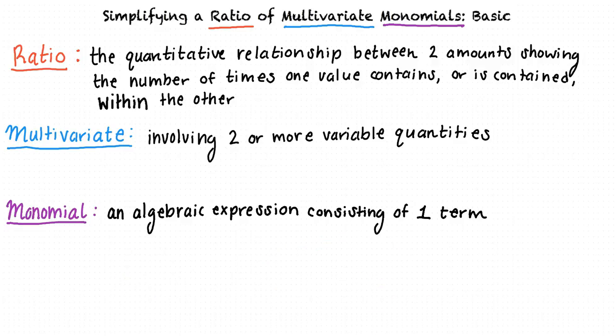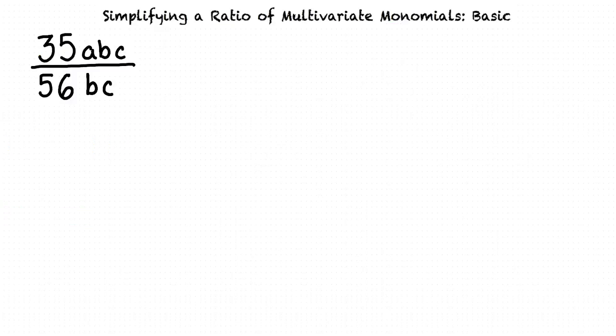What we are going to be dealing with in this video is a combination of all of these keywords. We are going to simplify the ratio of a multivariate monomial. For example, one such as 35abc over 56bc. To simplify a multivariate monomial like this one, there are a few steps we need to take.